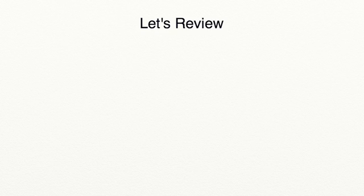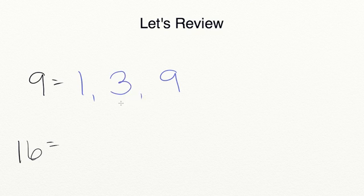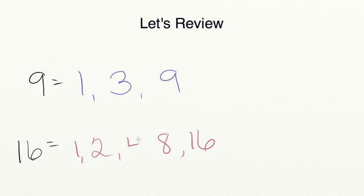Let's review what you've learned in today's lesson. When finding the greatest common factor of two or more numbers, you need to list out all of the factors for each number in order from least to greatest. For example, to compare 9 and 16: the factors of 9 are 1 times 9 and 3 times 3. The factors of 16 are 1 times 16, 2 times 8, and 4 times 4.